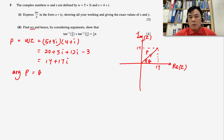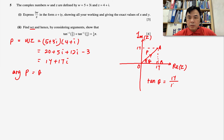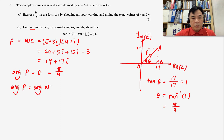We find the argument using trigonometry. Referring to the right-angled triangle, tan θ = 17/17 = 1, so θ = arctan(1) = 45° = π/4 radians. Therefore the argument of p, which is the argument of wz, equals π/4.